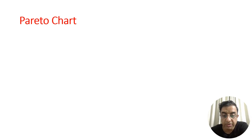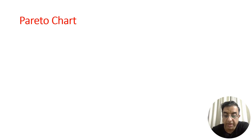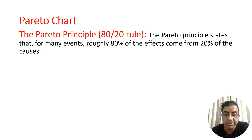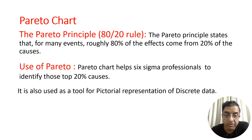What is the Pareto chart? Pareto is basically the 80-20 rule, in which 80% of the effects come from 20% of the causes. It is also used as a tool for pictorial representation of discrete data. We will go to Minitab and see how this tool works.